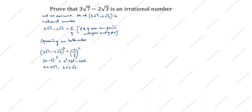So we have: (3 root 7) whole square plus (2 root 3) whole square minus 2 into 3 root 7 into 2 root 3, equal to p by q whole square.